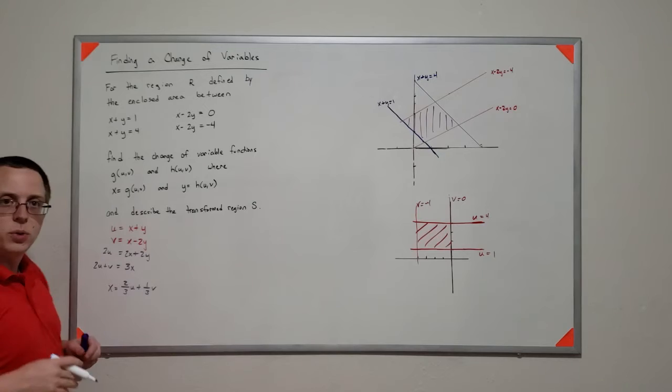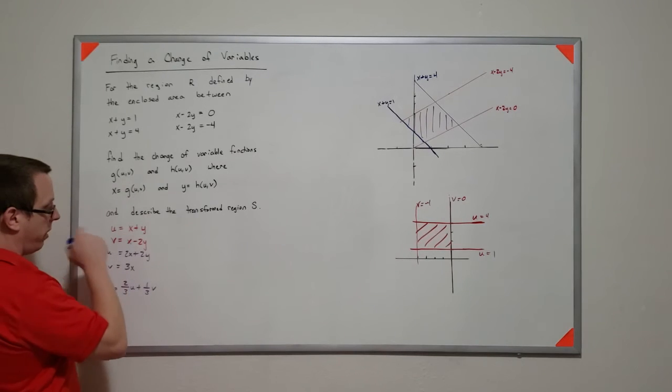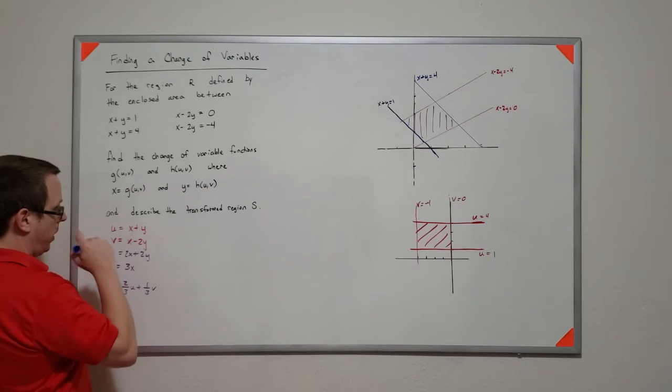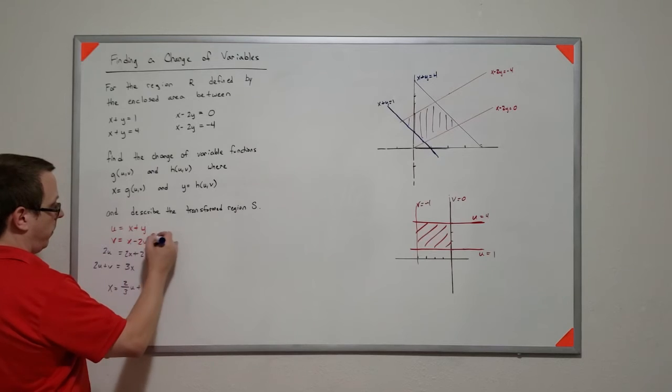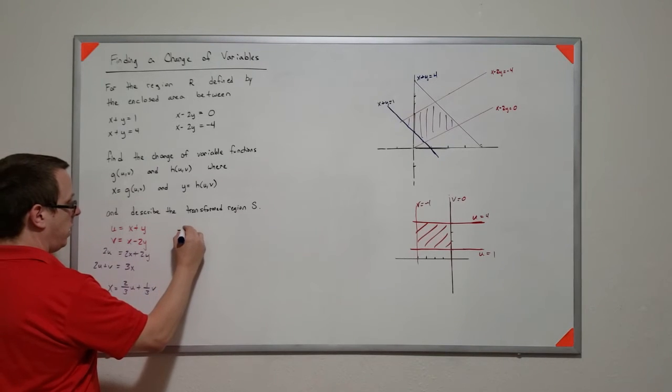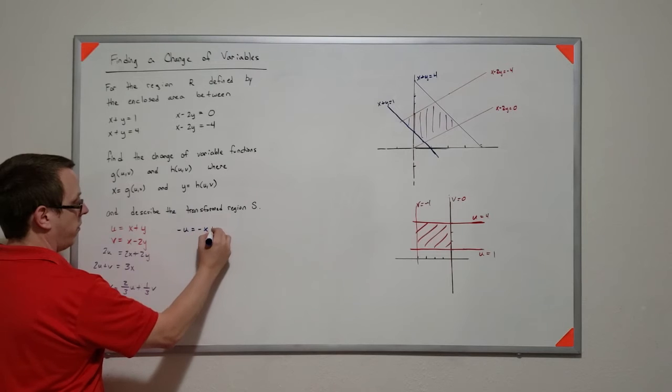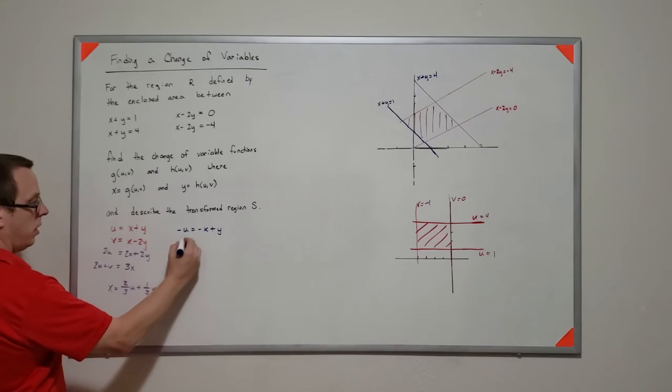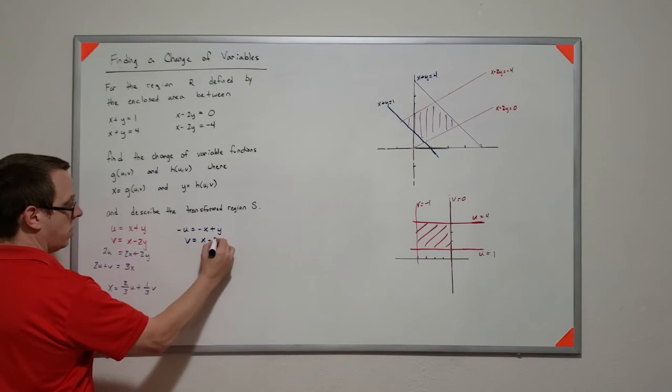Similarly, I can say, alright, well, if that's true, then I can say negative u is equal to negative x plus y. And I can leave v alone.